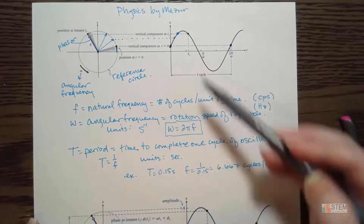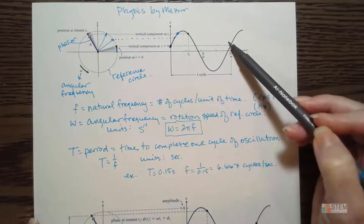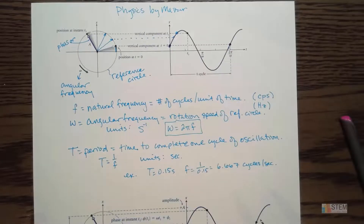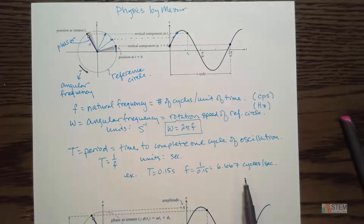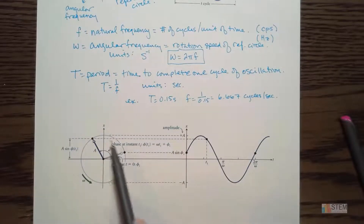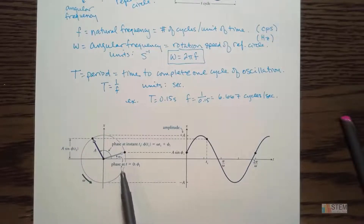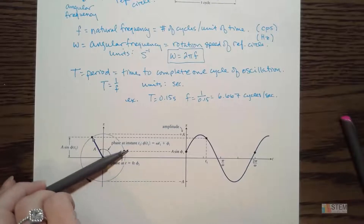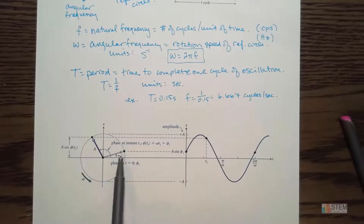Remember, one cycle is where you start and end at the same point on that graph. Now let's go down to this next picture, because this one has some more stuff on it. We've still got our reference circle, still got the angular frequency, and the phasor — remember the phasor is on that circle as it spins.